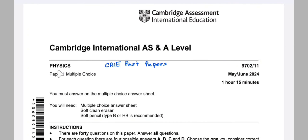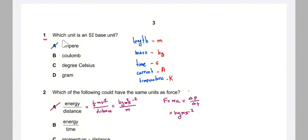Today's video discusses Physics Paper 1, Paper 2, May/June, variant 11, subject code 9702. Question 1: which unit is an SI base unit? There are seven base SI quantities: length, mass, time, current, temperature, luminous intensity, and amount of substance. Luminous intensity and amount of substance are not in our syllabus.